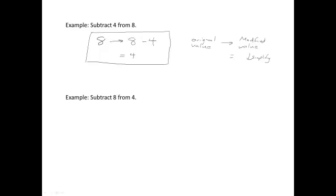Example: Subtract 8 from 4. This is another example where you need to be very sure that you do what the math tells you to do. The original value for this problem is 4, and the instruction is to subtract 8 from it. So that's 4 minus 8, not 8 minus 4. And so the answer here is going to be negative 4.